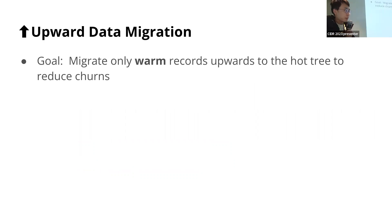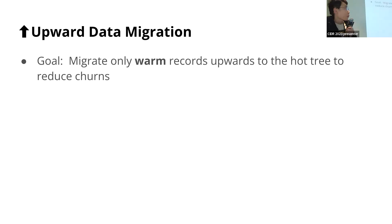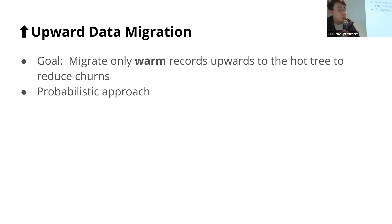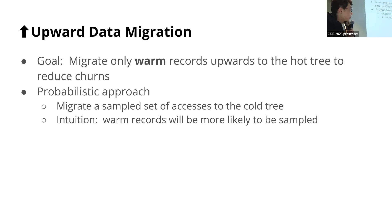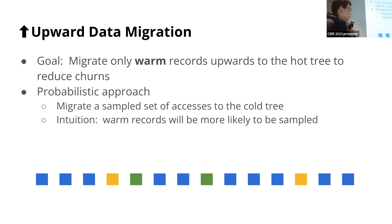Next is upward data migration. If we have a miss in the hot tree, we may need to migrate records from the cold tree to the hot tree. A naive solution would be to always migrate every accessed record from the cold tree to the hot tree. However, this would cause a lot of churn or evictions in the hot tree if cold records get migrated upwards. So our goal is to only migrate warm records upwards to the hot tree to reduce churn. To identify those warm records, we take a probabilistic approach in that we only migrate a sampled set of accesses to the cold tree. The intuition is that warm records will be more likely to be sampled — in this access stream, blue records are five times more likely to be sampled than yellow and green ones, so blue records will be much more likely to be migrated, which is exactly what we want.